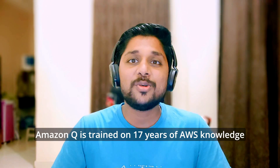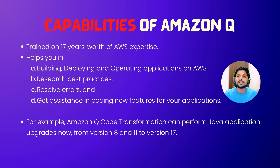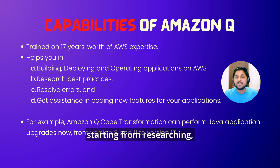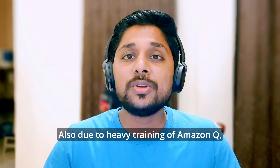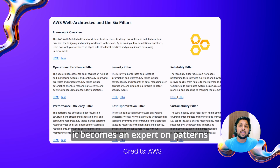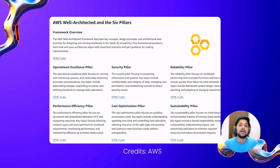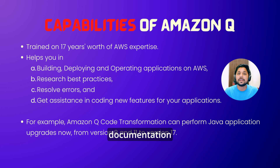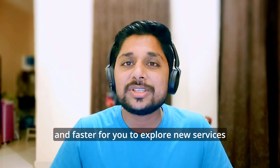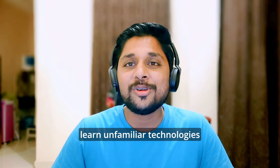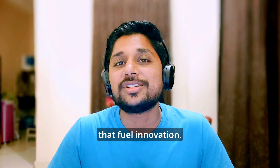Amazon Q is trained on 17 years of AWS knowledge and best practices. It is designed to help you at each stage of development — from researching, developing, deploying, optimizing and maintaining applications and workloads. Due to this heavy training, Amazon Q becomes an expert on patterns in the AWS Well-Architected Framework, follows best practices, documentation and solution implementation, making it easier and faster to explore new services and capabilities, learn unfamiliar technologies and architect solutions that fuel innovation.